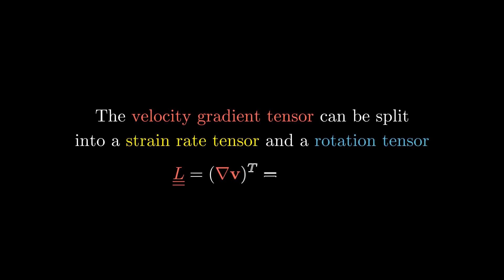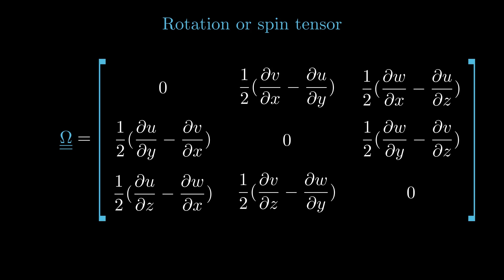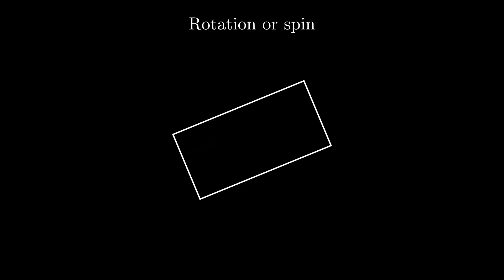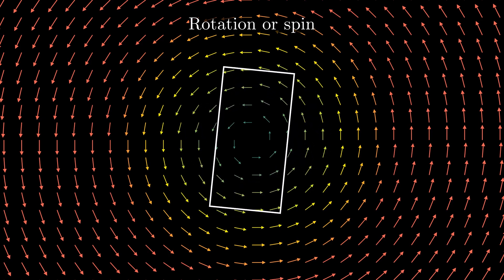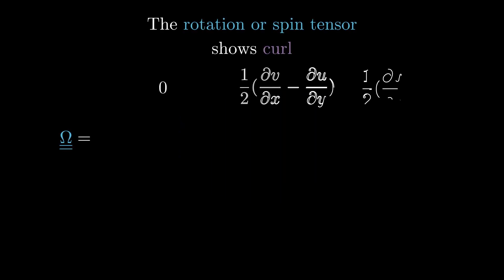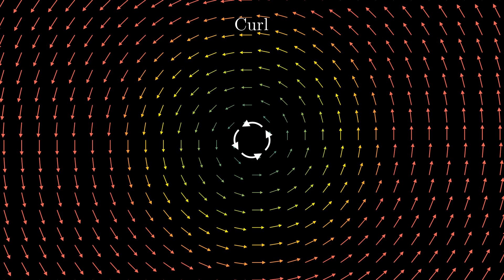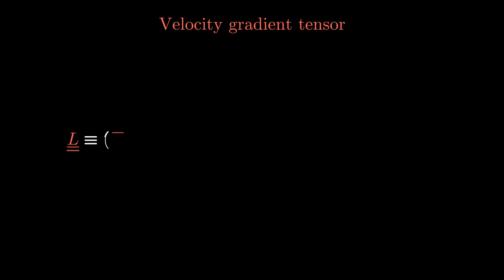To take a step back: the velocity gradient tensor can be split into the strain rate tensor, which we just discussed, and the rotation tensor, which we will look at now. The rotation or spin tensor looks like an antisymmetric matrix — what it does is rotate or spin the element. Another way to understand this is that the rotation tensor shows curl, which is a measure of how much a field rotates about a point. Hopefully you now have a greater understanding of the velocity gradient tensor.